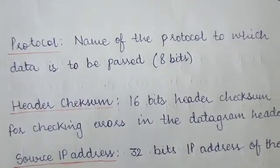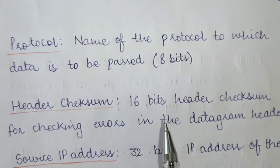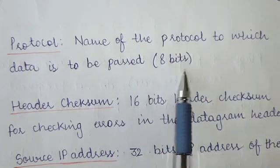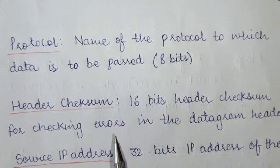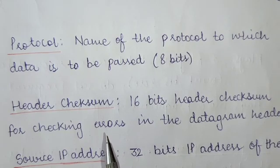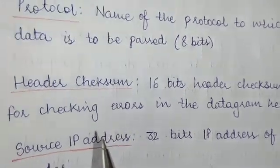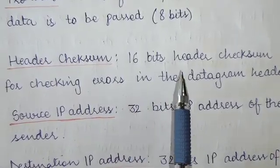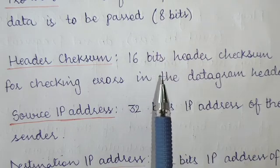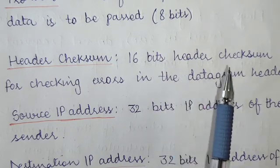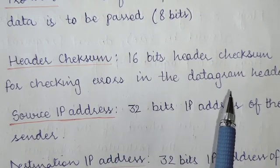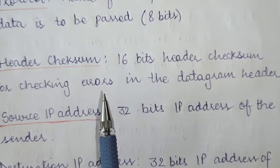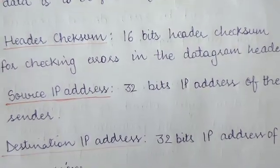The protocol field tells which protocol is being used — whether UDP or TCP — and to which protocol the data is to be passed. This is represented using 8 bits. The header checksum is of 16 bits and is used for checking errors in the datagram header — any errors present in the datagram header are checked using the header checksum.